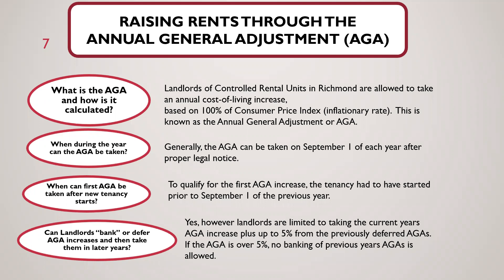When a new tenancy starts, to qualify for the first AGA increase, the tenancy had to have started prior to September 1st of the previous year. One question we often get is: can landlords bank or defer AGA increases and then take them in later years? The answer is yes. However, landlords are limited to taking the current year's AGA increase plus up to 5% from previously deferred AGAs. If the AGA is over 5%, as is the case in 2022, then no banking of previous years' AGAs is allowed.